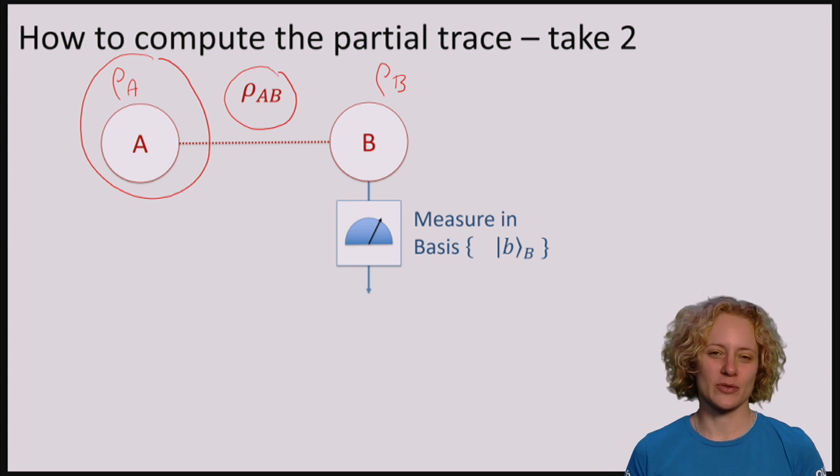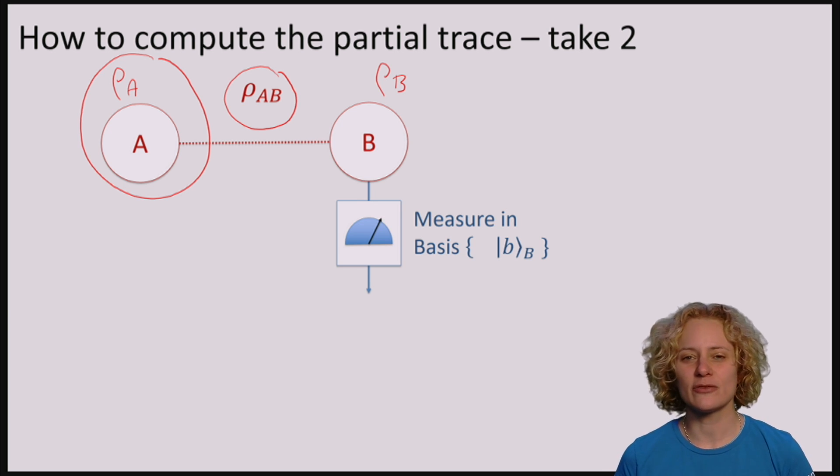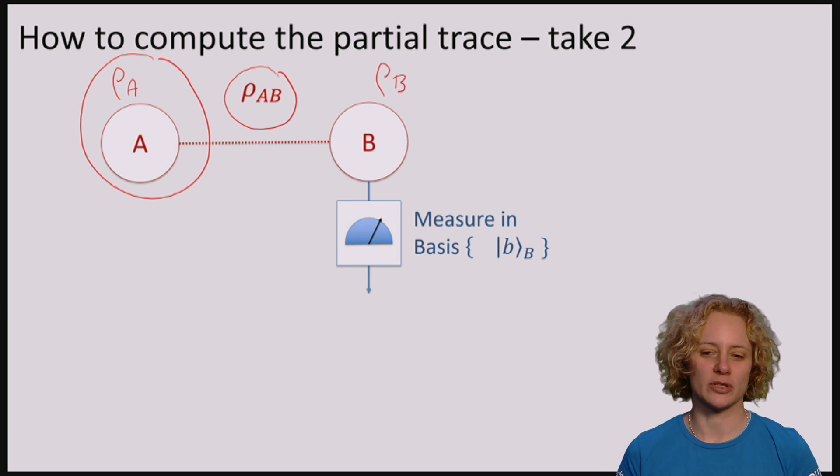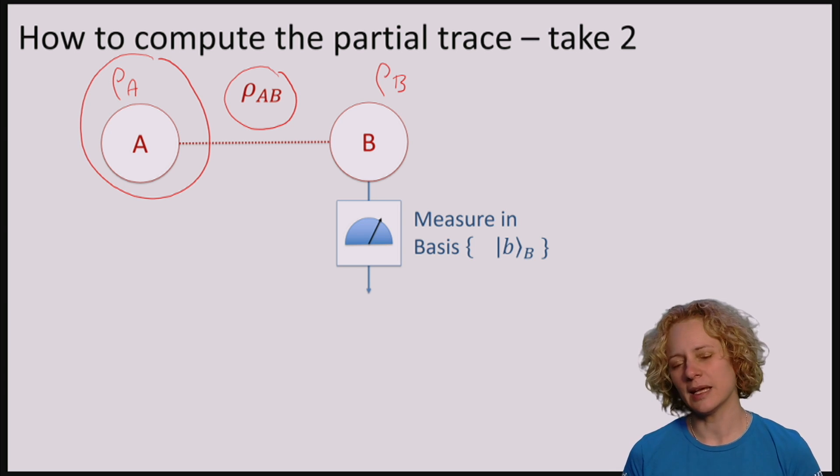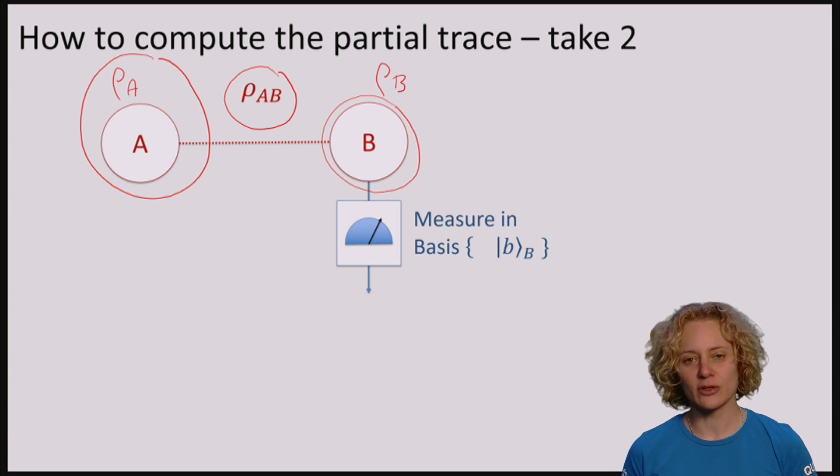This way of computing the partial trace is nice because it gives us conceptually a different way to understand the partial trace operation. Namely, we can think that the partial trace corresponds to performing a measurement on qubit B and forgetting the outcome.